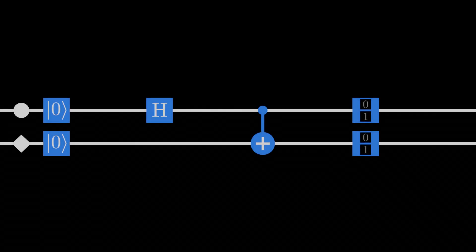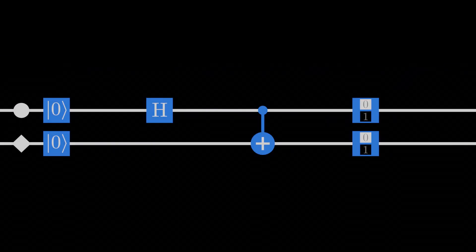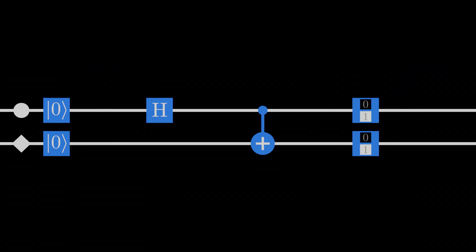For example, if we pass two qubits through this specific set of gates, then measure them afterwards, we find that we always measure them as both zero or both one.